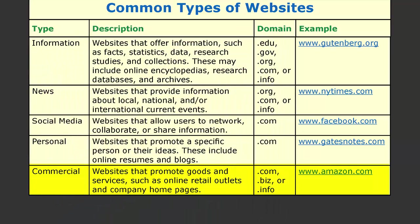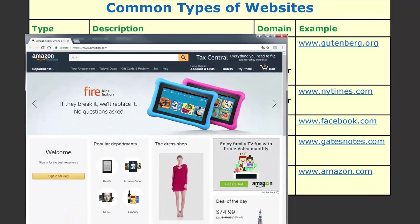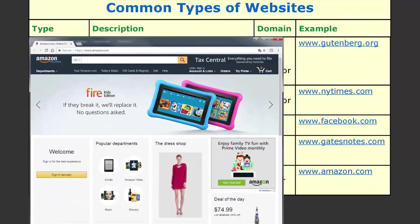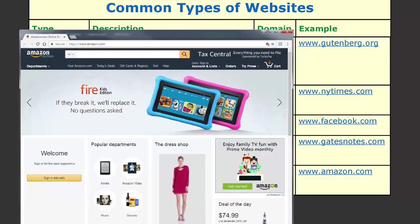Finally, there are also many commercial websites. These websites promote goods and services such as online retail outlets and company homepages. Typical domains include .com, .biz, and .info. An example is www.amazon.com.